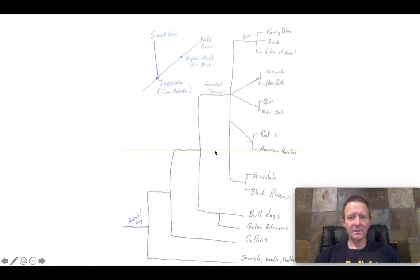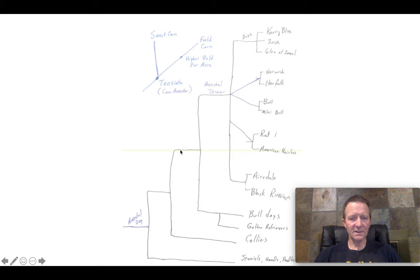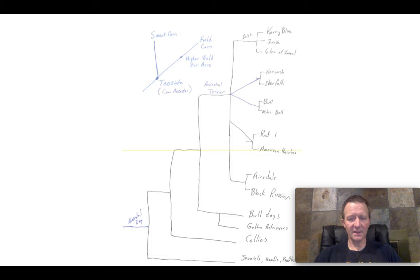Now moving beyond terriers: here's another cladogram showing that all terriers can be traced back to one ancestral terrier variety, but of course there are more varieties of dogs. If we start going back in time, this would be the variety of dog that we can trace all of them back to. Continuing back in time, eventually we get to the first ancestral dog variety that we can trace all modern dogs to — that is a major idea.